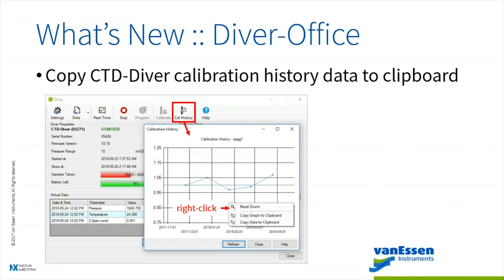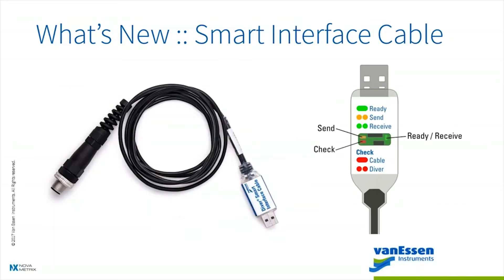You can copy CTD Diver calibration history data to the clipboard. When you connect to a CTD Diver, you will find the Cal History button in the Diver window. You click that and the calibration history graph will open. If you right-click on the graph, you have two options: copy graph to clipboard, which copies an image of the graph that you can paste into Word, or copy the data to clipboard, which you can then paste into Excel.